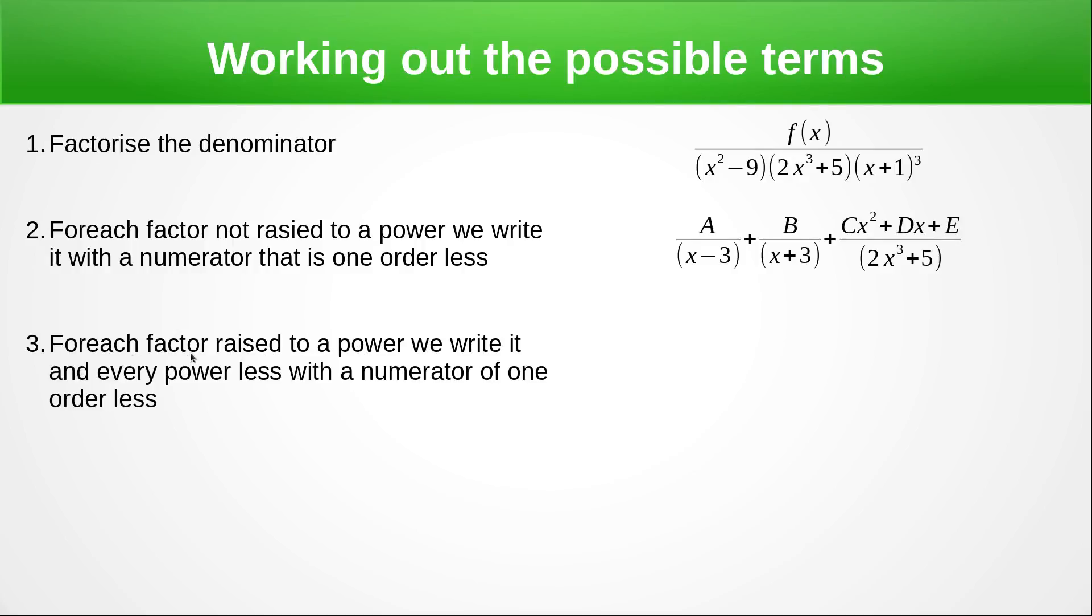And then for each factor raised to a power, in this case I've got this factor (x + 1) raised to the power 3, we write it with every power less with a numerator of one order less. So this is order 1 so an order less is just going to be a constant. So we've got (x + 1)³ with the highest power under the constant. And then we've got a constant over (x + 1)², so that's just 1 power less, plus h over (x + 1) and that's the bottom power.